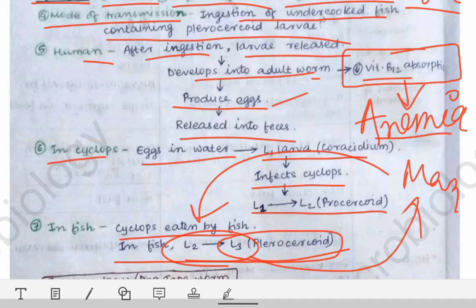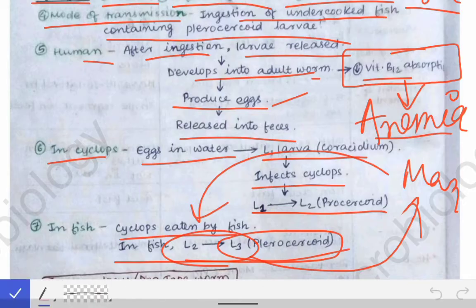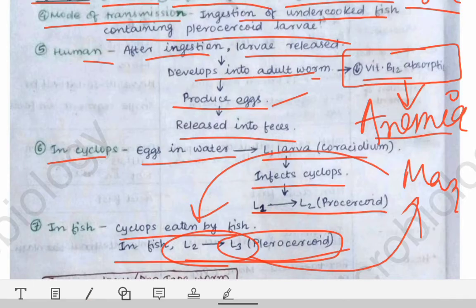For lab diagnosis of Diphyllobothrium latum, you can refer to the general overview video on lab diagnosis of parasitological disorders. If you have seen that video, you can write the answer for the lab diagnosis of any helminthic disease.